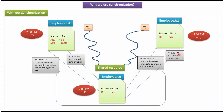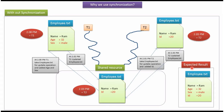At 2.03 pm, thread2 updated the employee.txt file. Now the employee.txt file contains id equal to 20. The expected result should be name equal to rom, age equal to 32, sex equal to male, and id equal to 20. But what we got here is name equal to rom and id equal to 20. We lost the information which thread1 had updated.